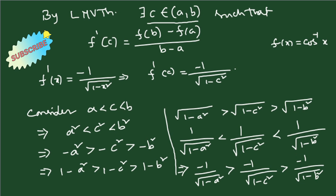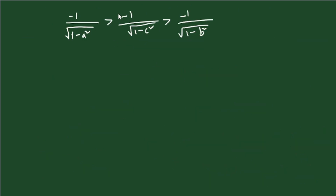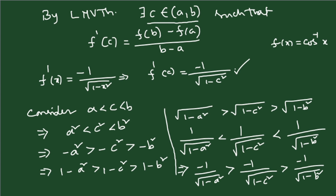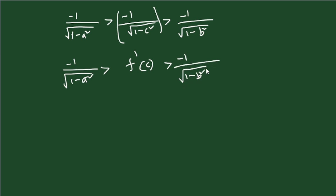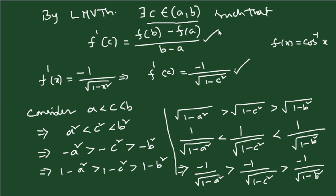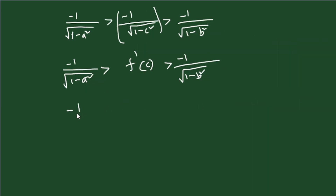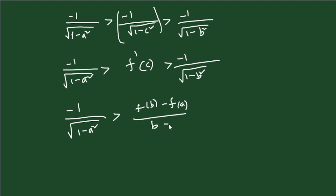Now, −1/√(1 − c²) is nothing but f'(c). And since f'(c) = [f(b) − f(a)] / [b − a], we can substitute: −1/√(1 − a²) > [f(b) − f(a)] / [b − a] > −1/√(1 − b²).